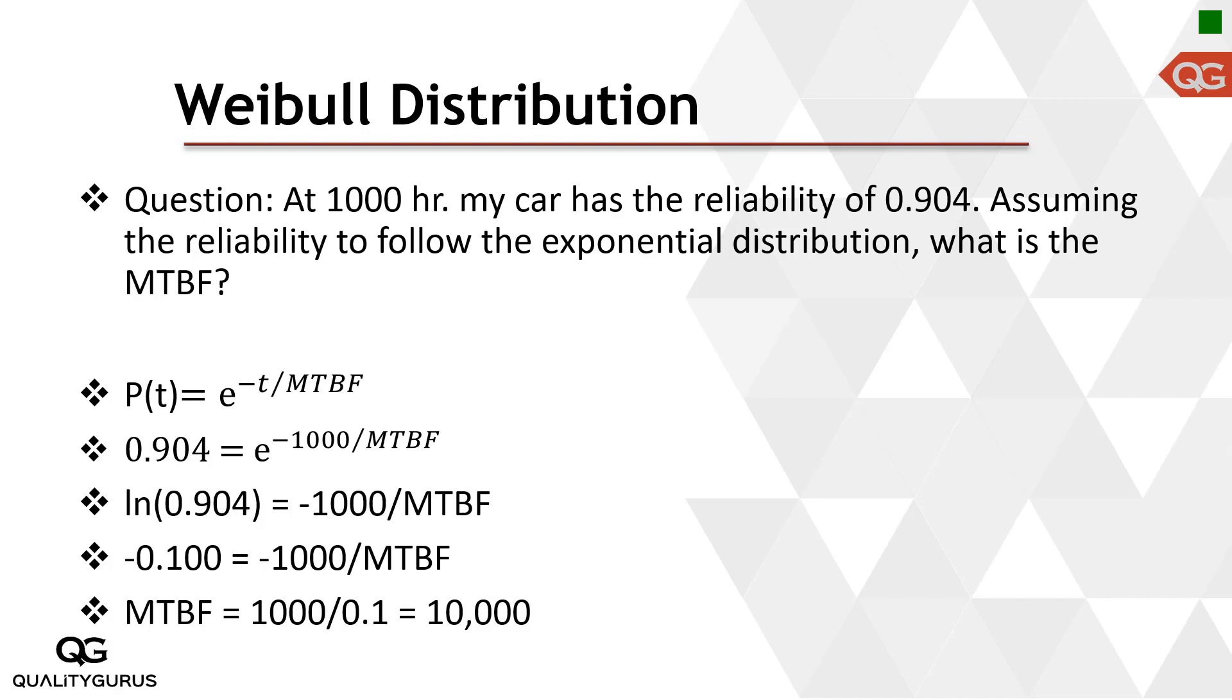Then assuming this to follow the exponential distribution. When I say exponential distribution, then I immediately come to this formula which is P(t) equals e to the power minus lambda t, or e to the power minus t divided by mean time between failure. This is the formula we'll be using.